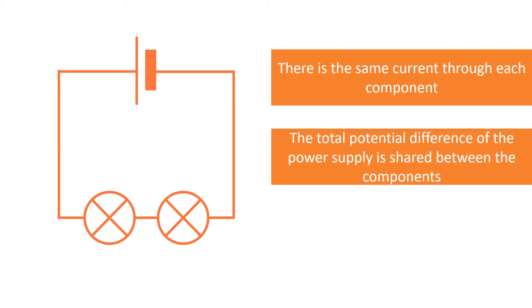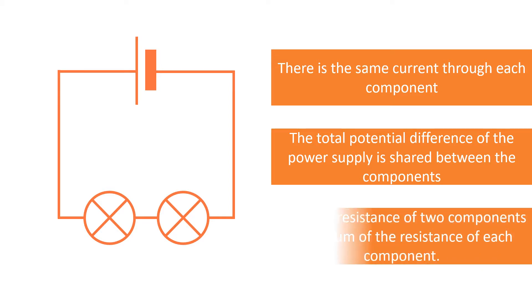The total potential difference of the power supply is shared between the components. And finally, the total resistance of the two components is the sum of the resistance of each component.